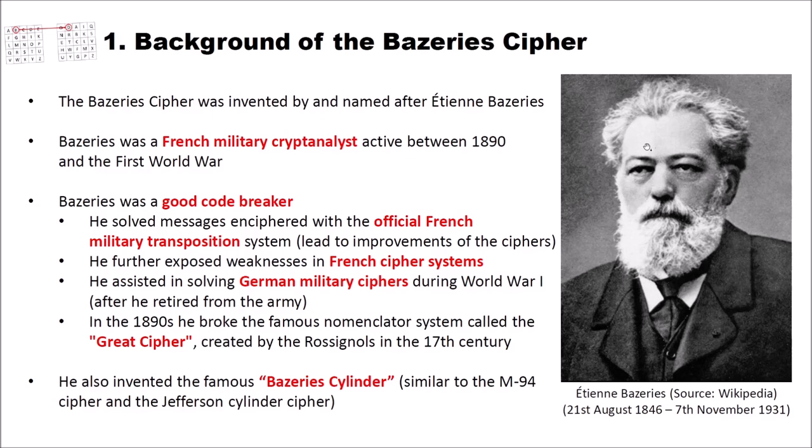Bazeries was a good code breaker. He solved messages enciphered with the official French military transposition system, and this in turn led to improvements of these ciphers. He furthermore exposed weaknesses in French cipher systems. He assisted in solving German military ciphers during World War I, and at that time he already had retired from the army. In the 1890s he broke the famous nomenclator system called the Great Cipher, which was created by the Rossignols in the 17th century.